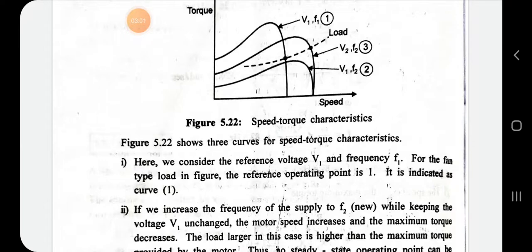Consider reference point one, where voltage is V1 and frequency is F1 — this is for a fan-type load. The reference operating point is indicated as curve number one. Now if I increase the frequency to F2 while keeping voltage constant at V1, the motor speed increases but the torque decreases.